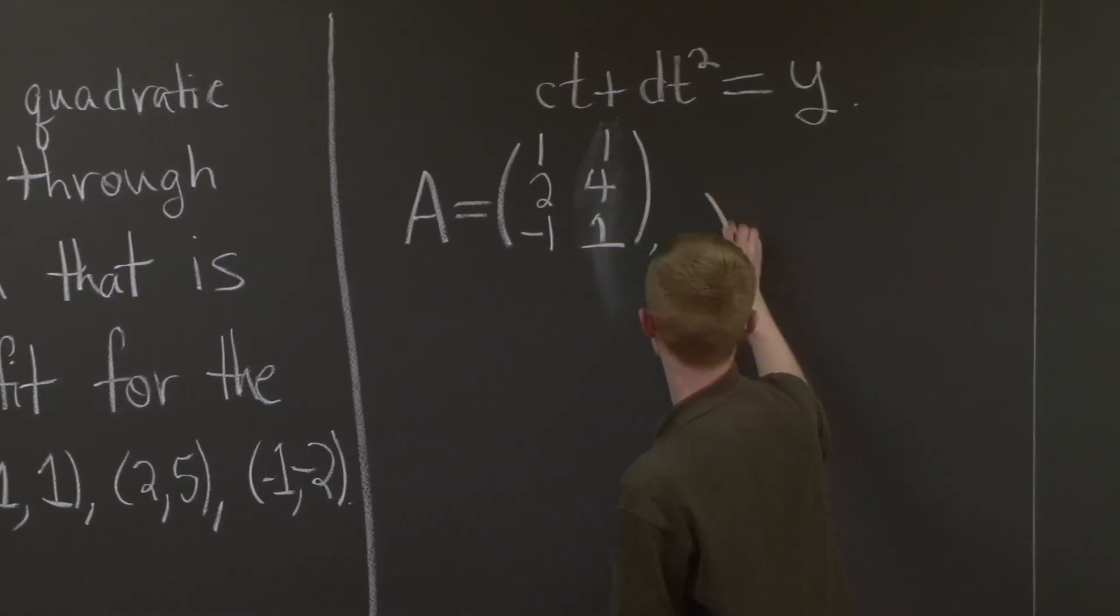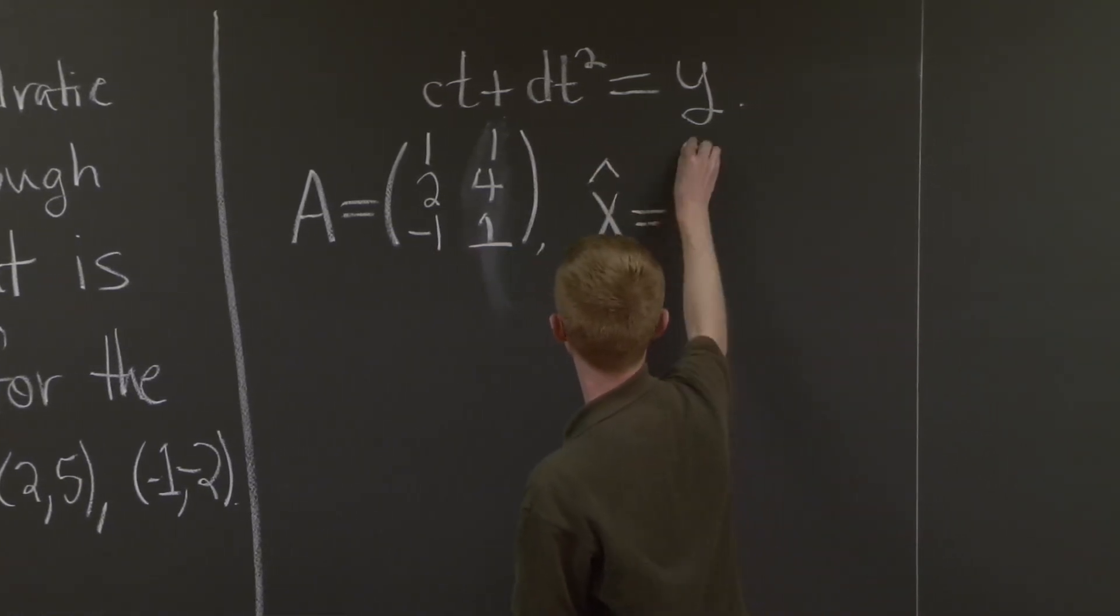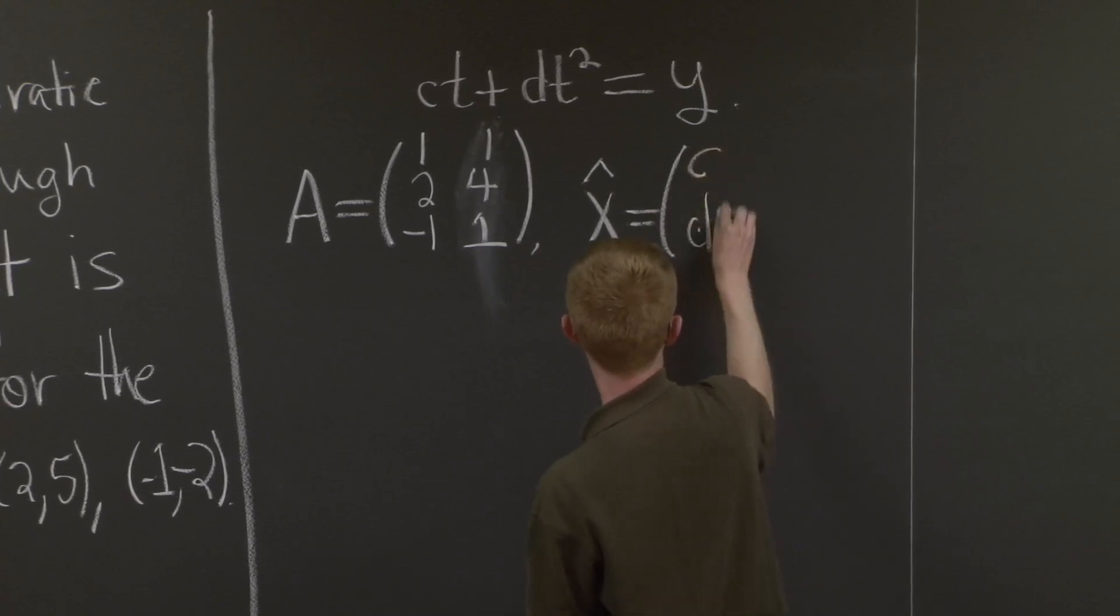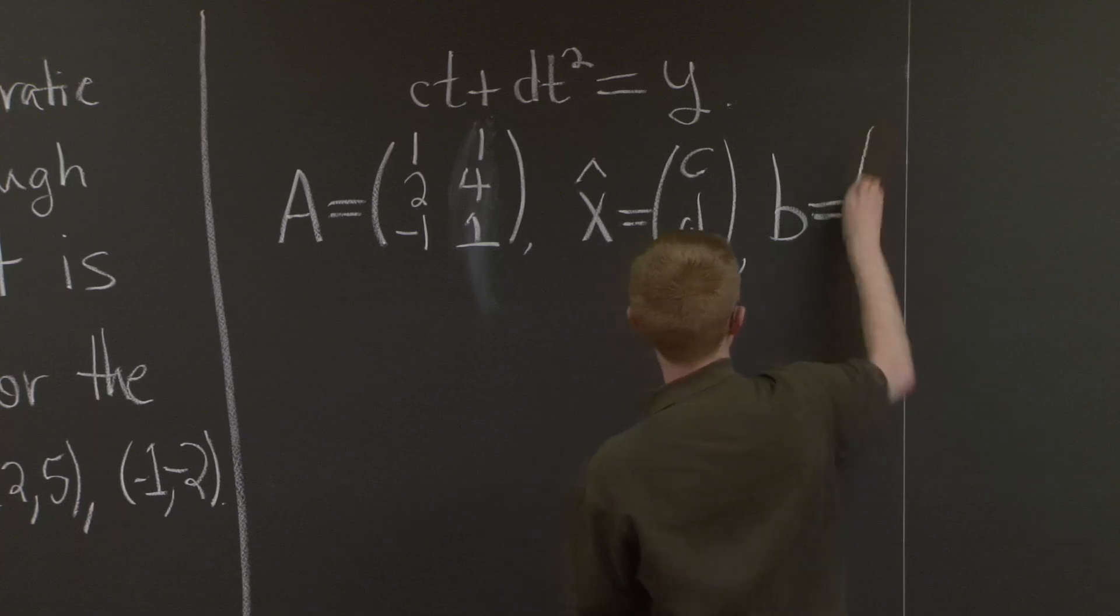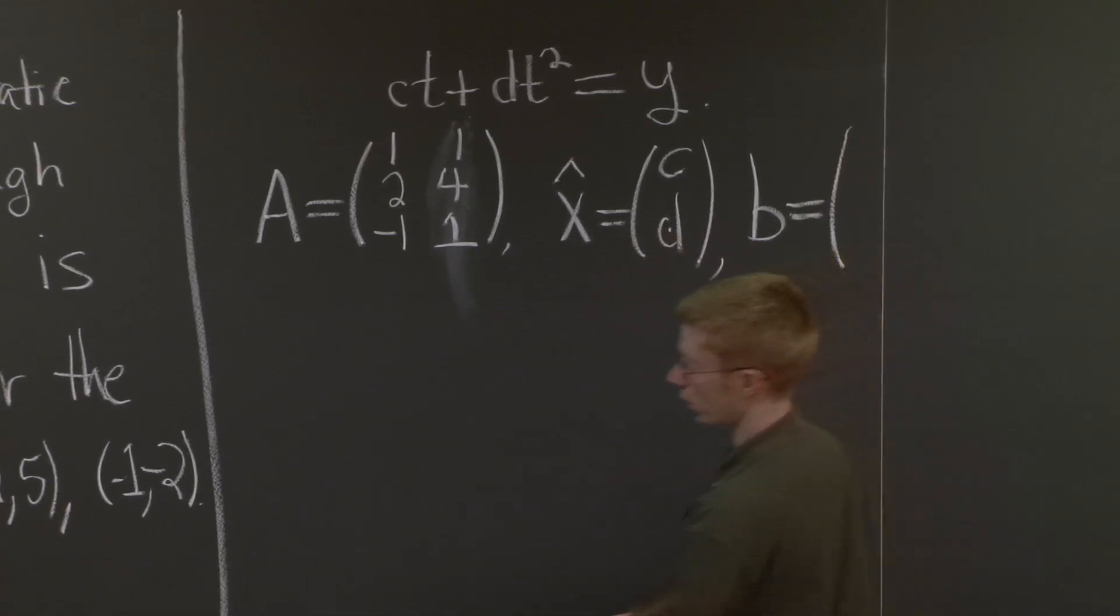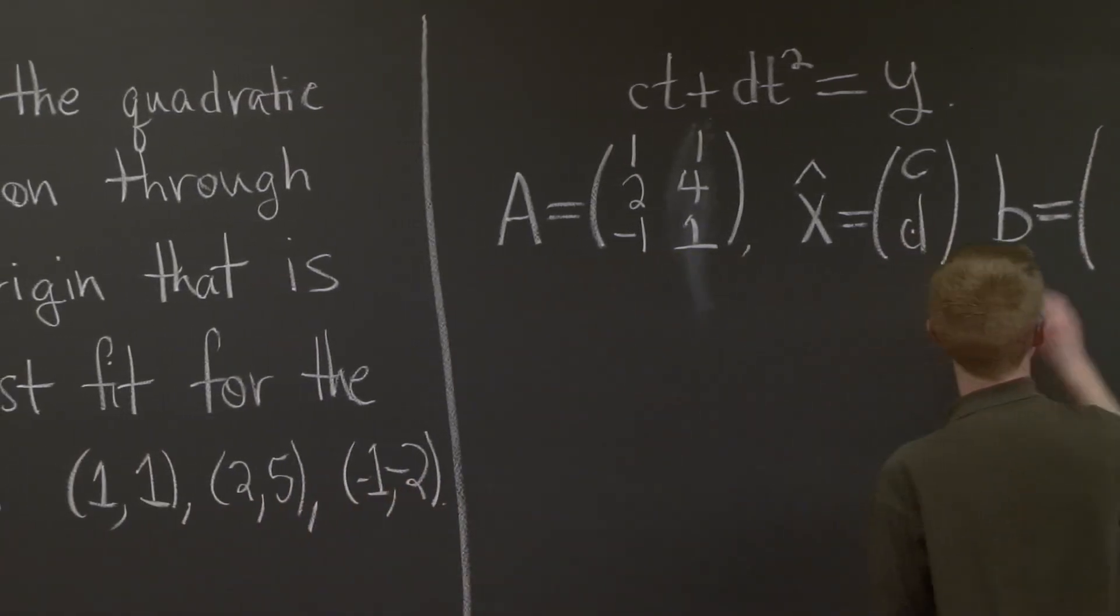And my x hat, that's just c and d. And my b, this is going to be the second coordinates: 1, 5, and -2.